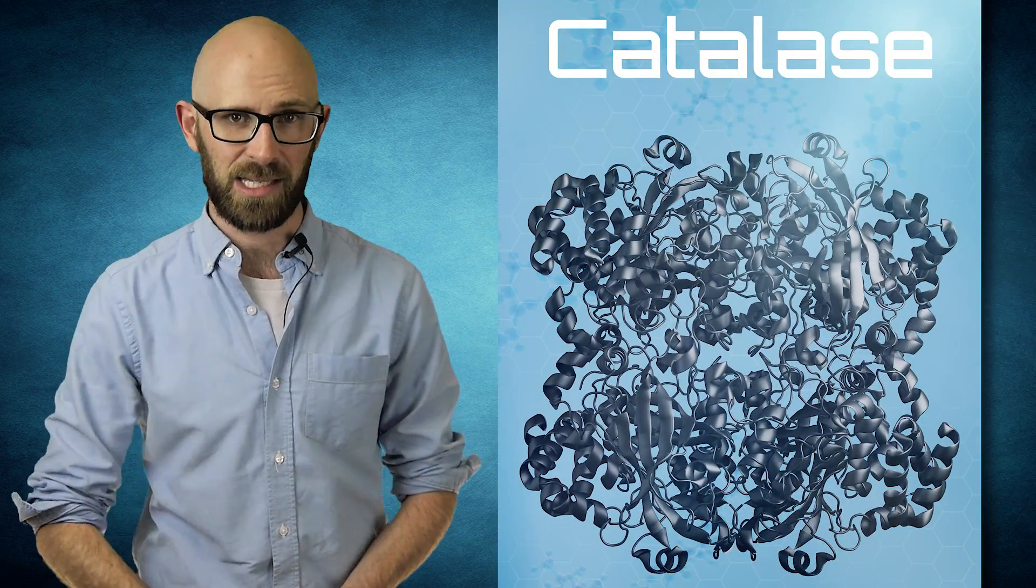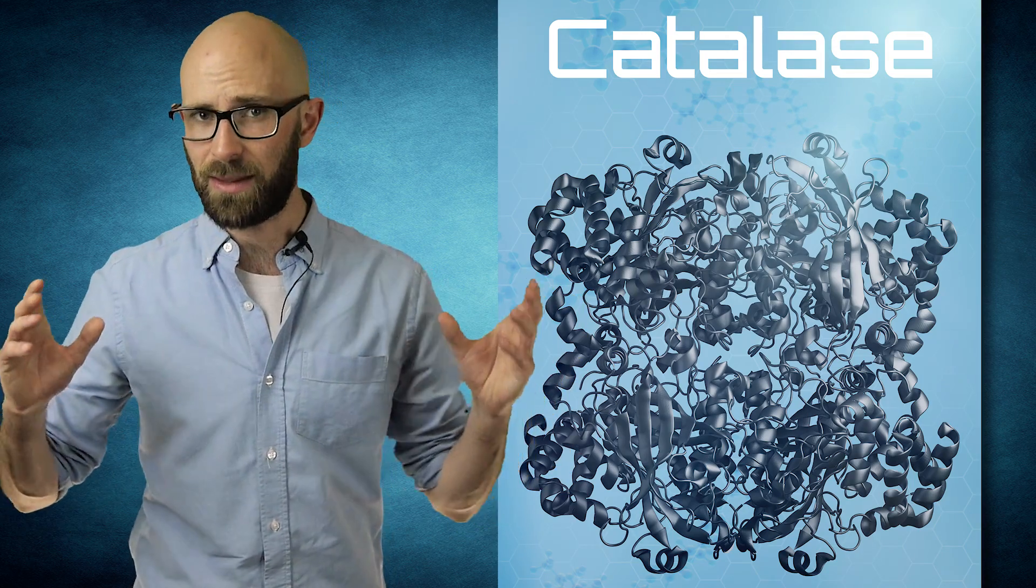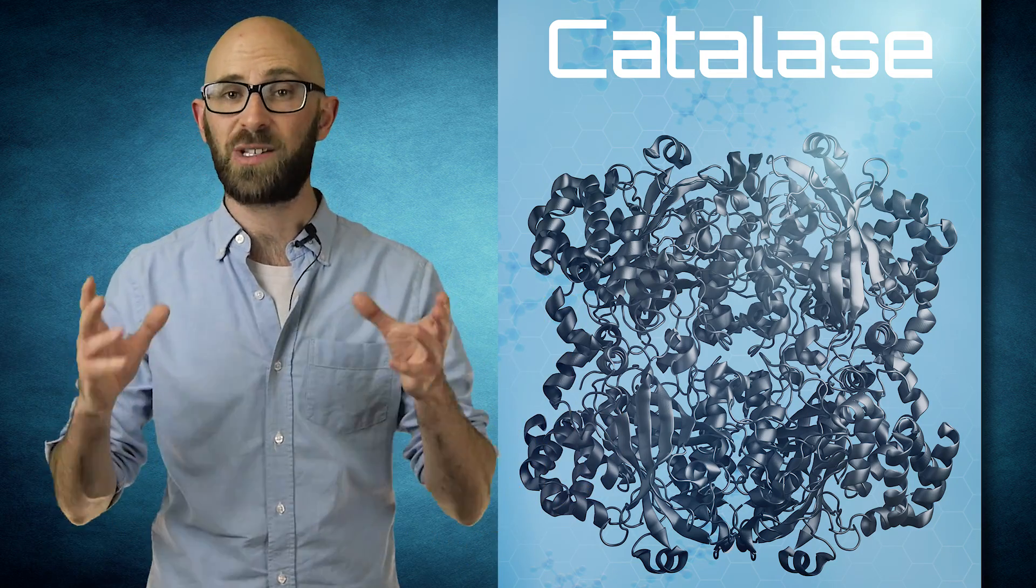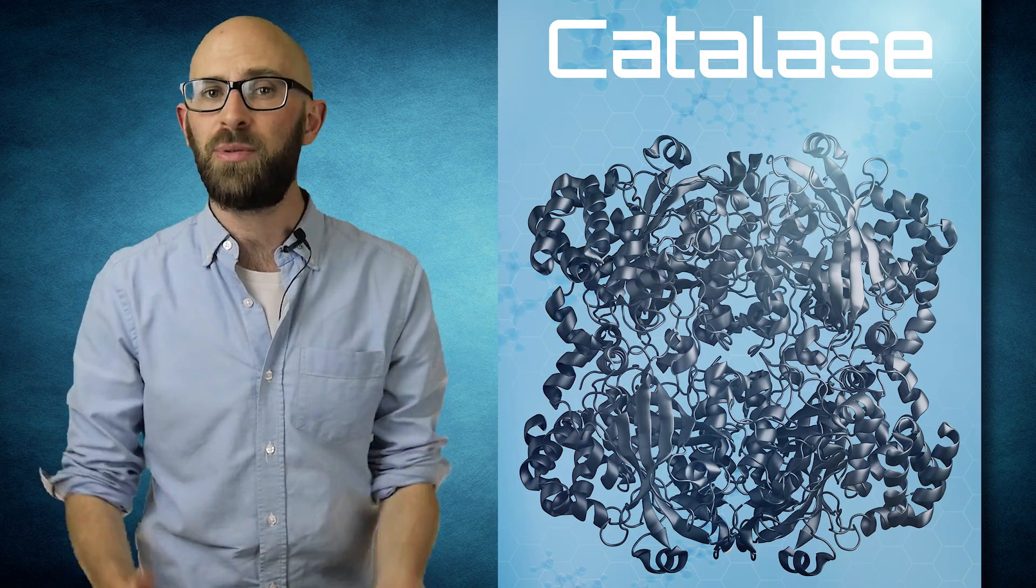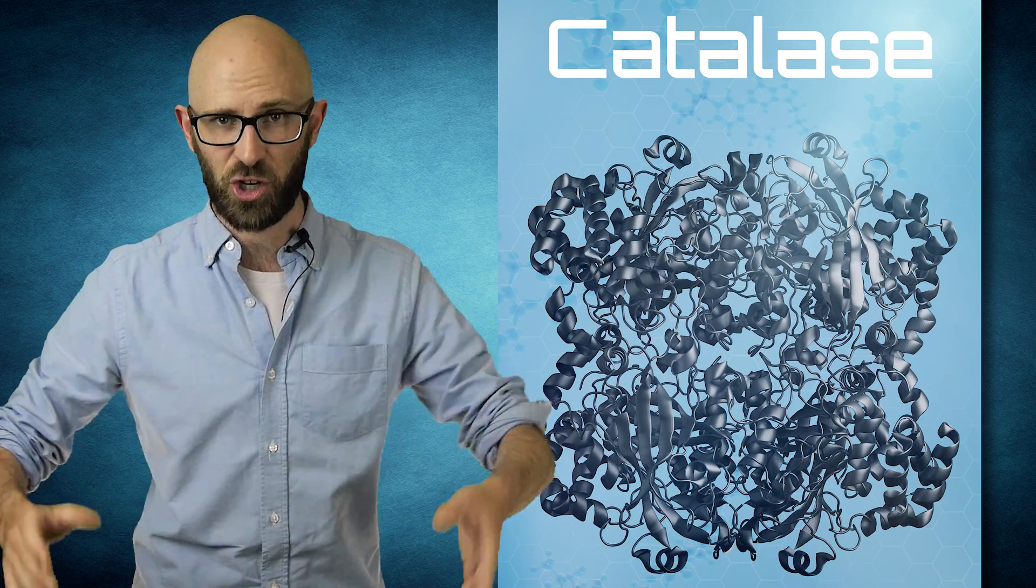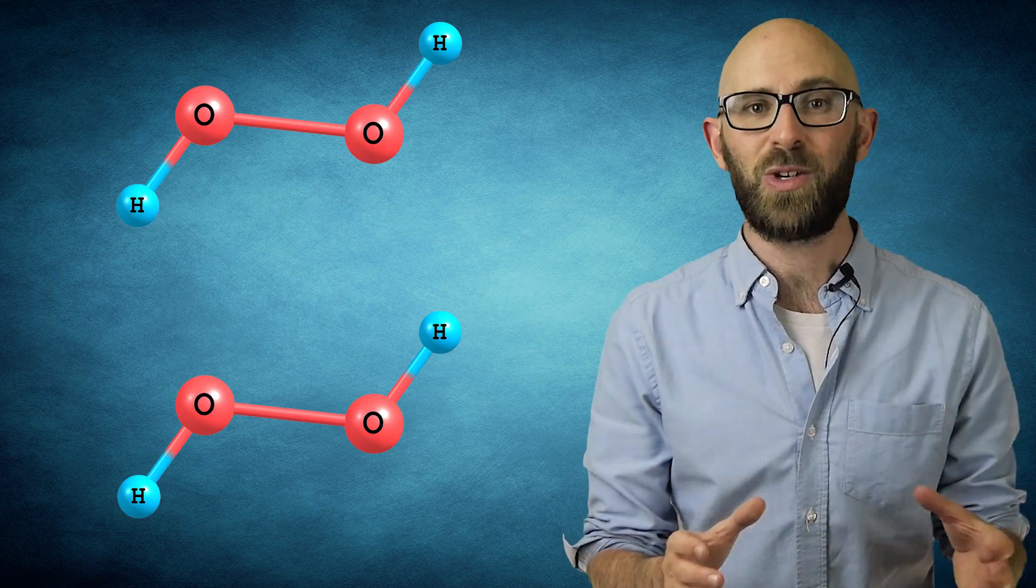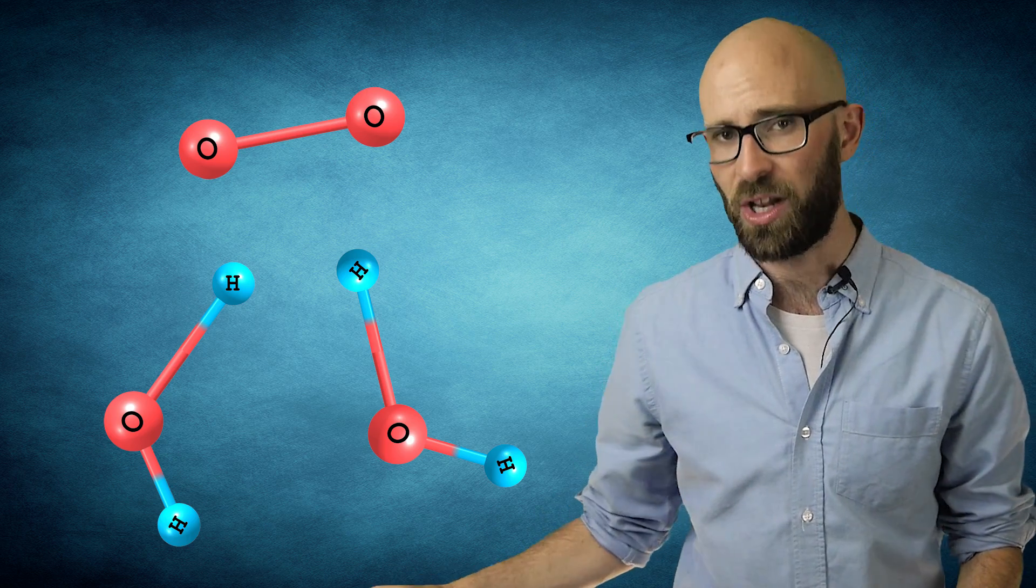Now enter the enzyme catalase, which is found in almost all living things. Catalase circulates throughout the cell, waiting to come into contact with the H2O2 being produced by cellular respiration. Once in contact, it rapidly converts into water and oxygen via two H2O2 molecules, becoming two H2O water molecules and one O2 dioxygen molecule.